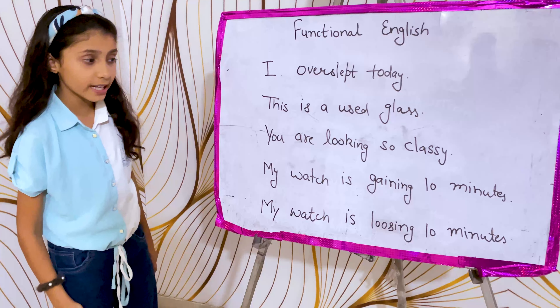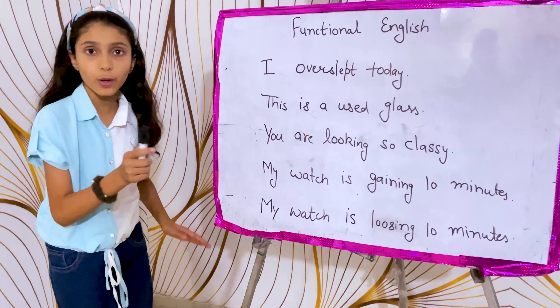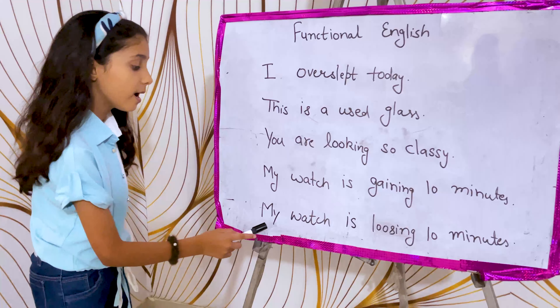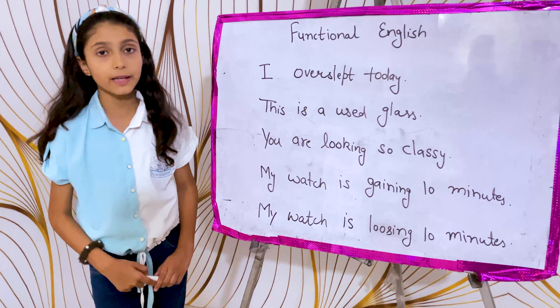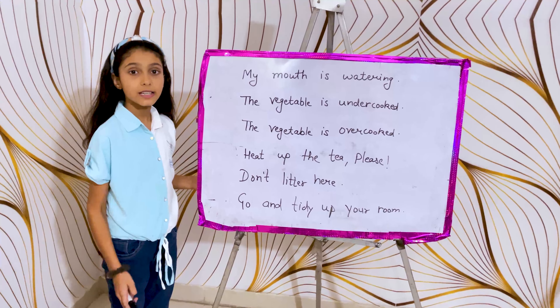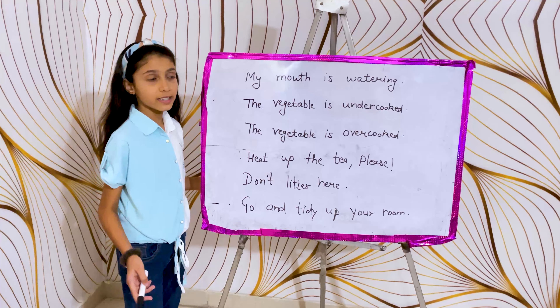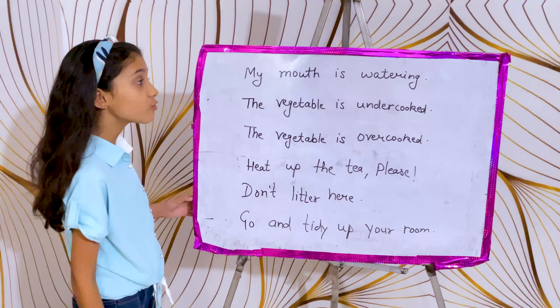First one: 'I overslept today.' This means how do we say that I am very sleepy — but what we say is: 'I overslept today.' Next one: 'This is a used glass.' This is not a small glass — this is a used glass.